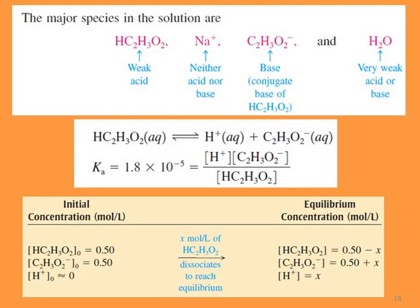The major species in this solution are acetic acid, sodium ion, acetate, and water. Acetic acid is a weak acid; sodium ion is neither acidic nor basic because it is the conjugate acid of a strong base, so it doesn't affect pH. Acetate is the conjugate base of a weak acid, so it has some affinity to react with protons to form acetic acid. Water is a very weak acid or base.